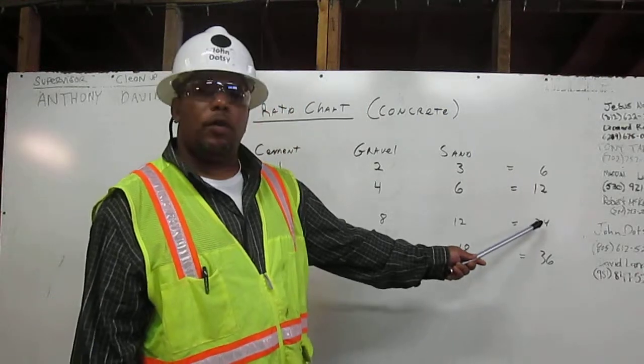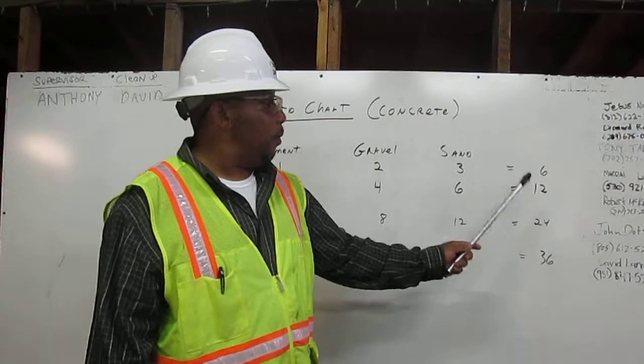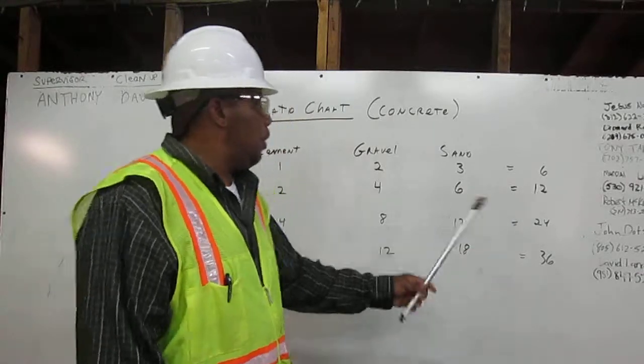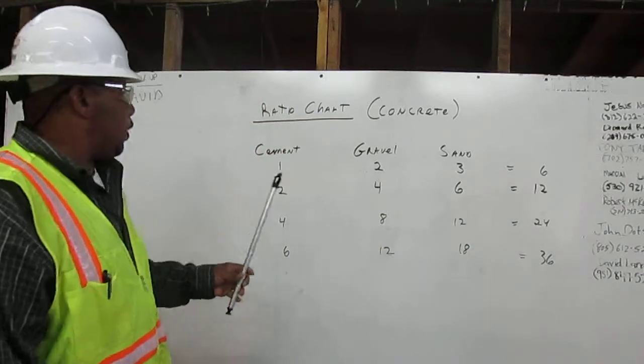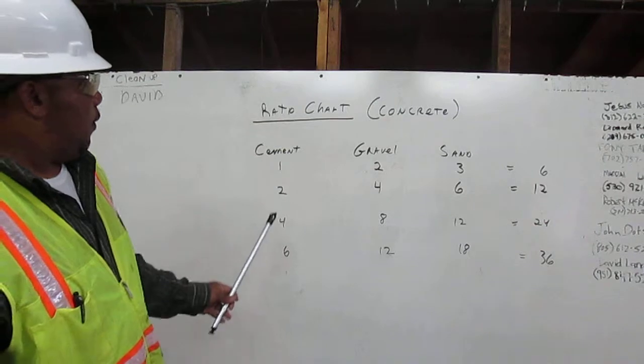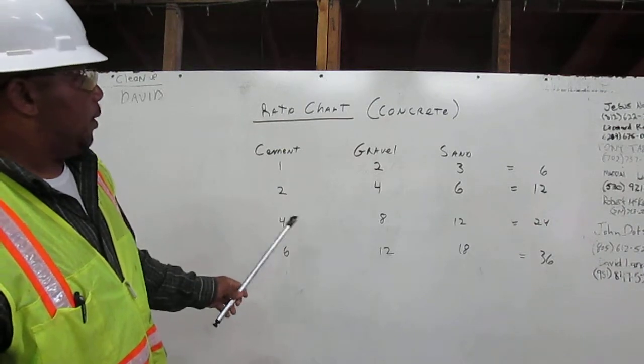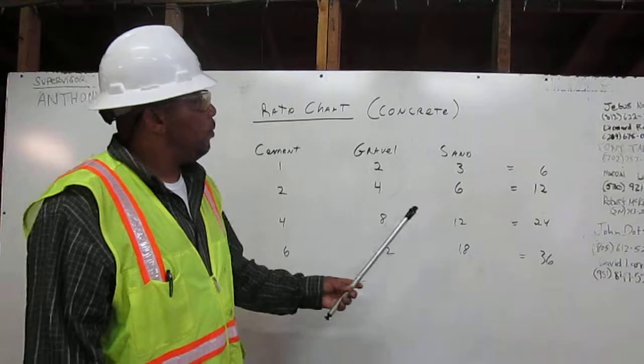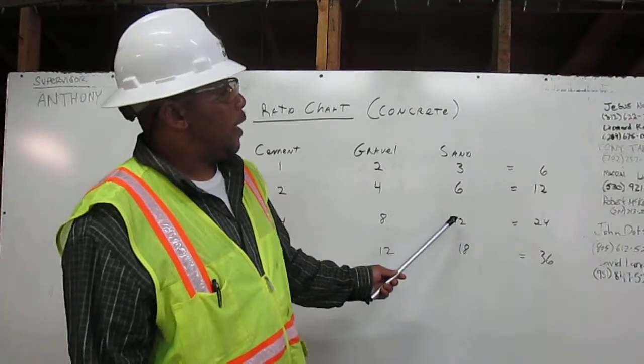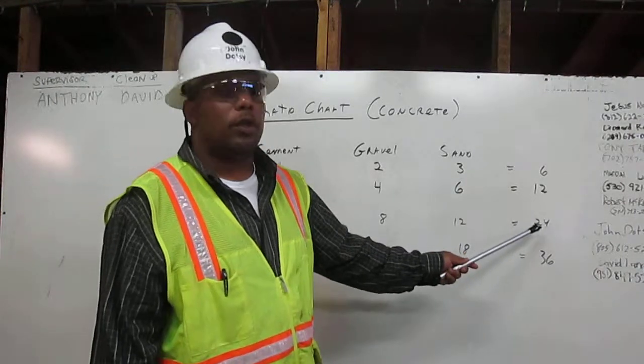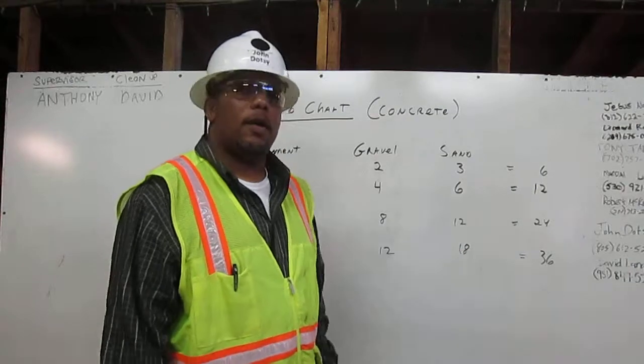Now, to get 24 cubic yards of concrete, we're going to double the 12 yards. We're going to have 4 cubic yards of cement, 8 cubic yards of gravel, and 12 cubic yards of sand, which is going to give us 24 cubic yards of concrete.